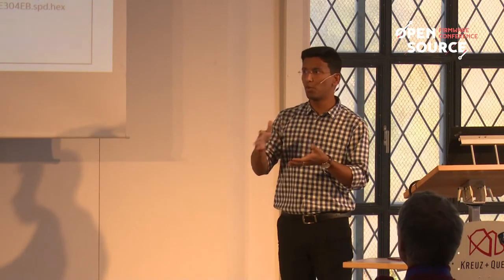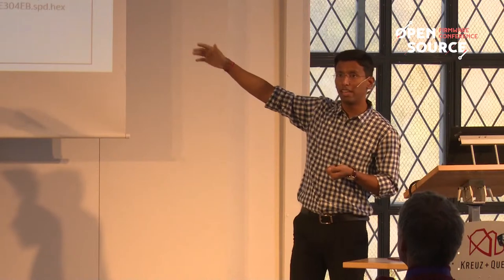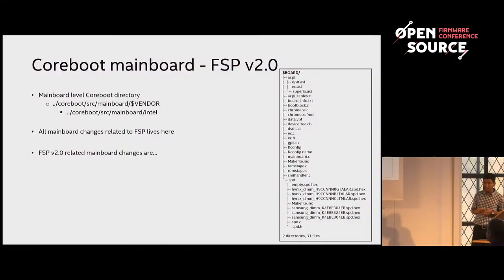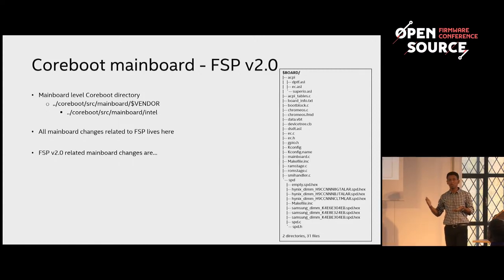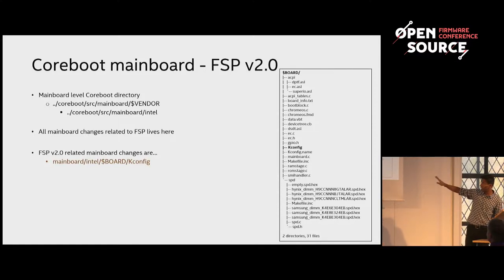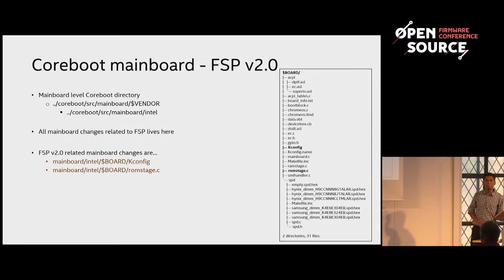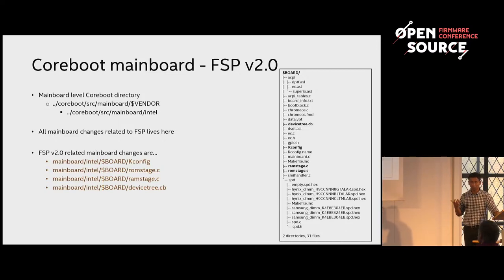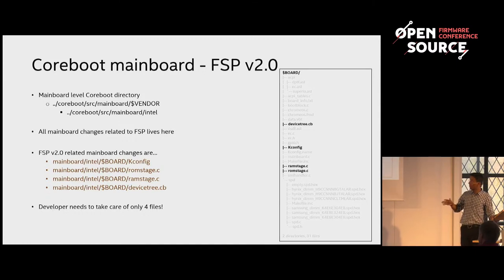Now I have taken a sample example of an Intel-based mainboard. This is typically what the folder structure looks like in your mainboard directory — roughly around 30 to 35 files. All the configuration for your mainboard, and all those UPDs provided to FSP so it can initialize your platform, should be done here. The key files are: kconfig, romstage.c (where we fill in all the FSP-M related policies), ramstage.c (where we update FSP-S UPDs), and devicetree.cb (where all configuration data exists in a more readable form).